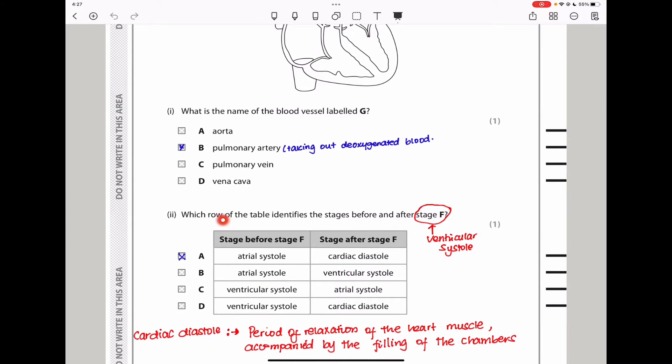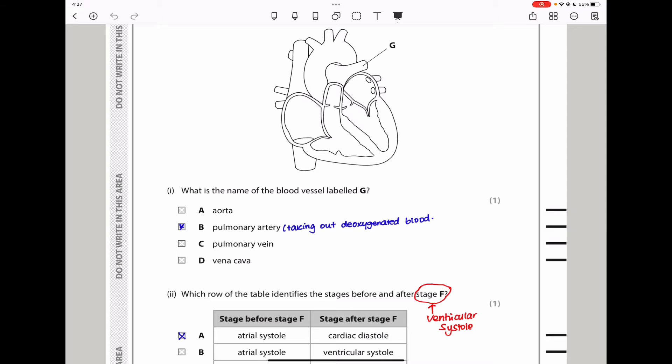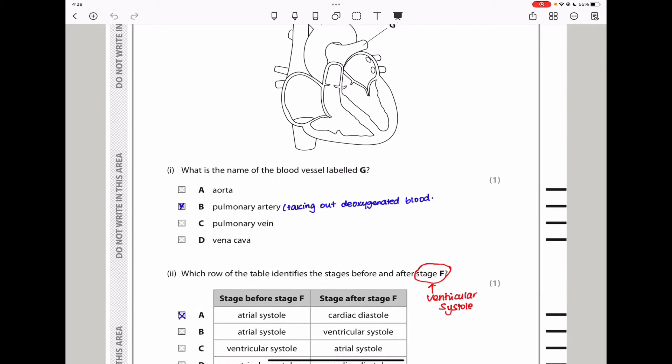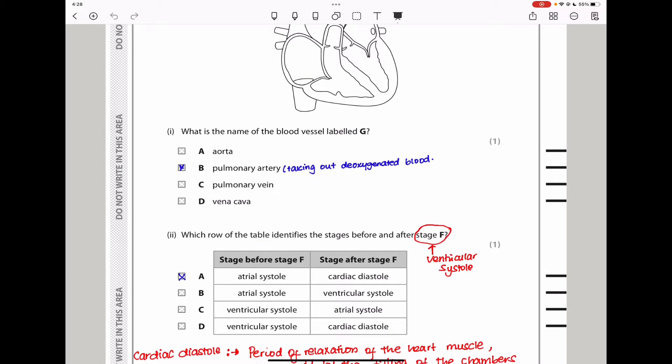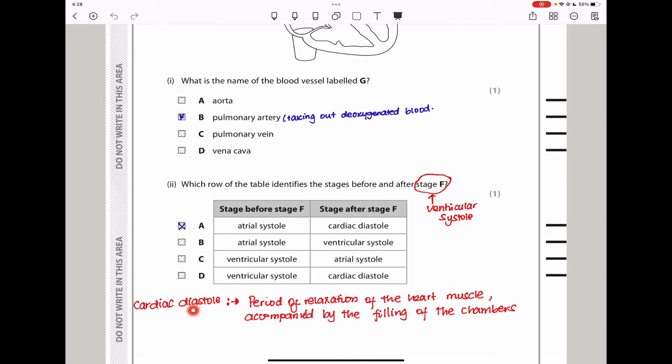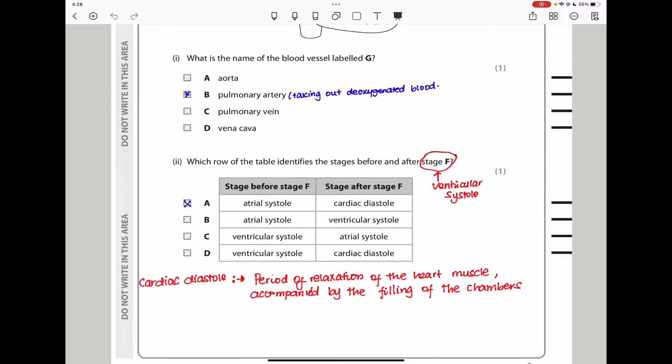Which row of the table identifies the stages before and after stage F? In stage F, blood is being pumped from the ventricles through the blood vessels, the pulmonary artery as well as the aorta, out of the body. It means the stage that came before this should have been atrial systole. And then the stage that is going to come afterwards is cardiac diastole, the period of relaxation of the heart muscle accompanied by filling of the chambers. The answer here should be A because before the ventricular systole, we have atrial systole, and after that we will have cardiac diastole.